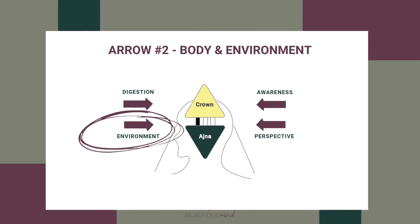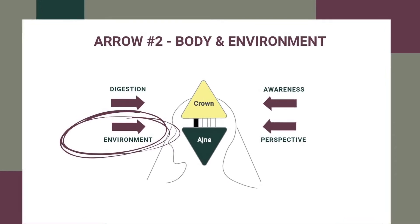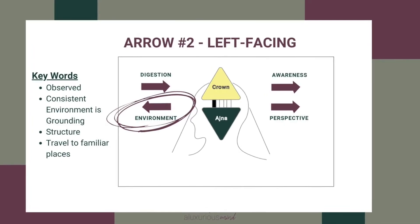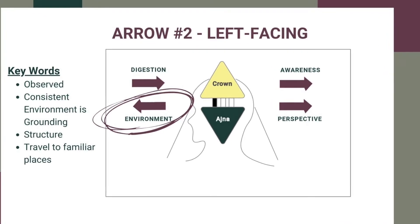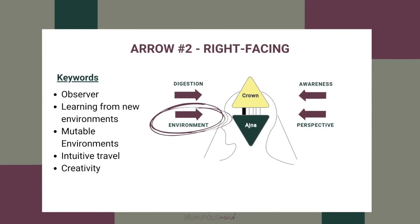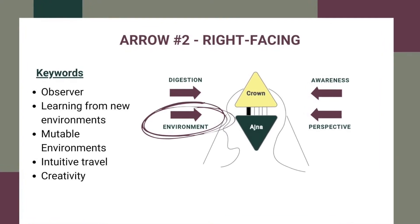Let's talk about arrow number two. Arrow number two is located on the bottom left-hand side of the body graph chart. Generally speaking, this arrow tells us something about our physical body and environment — not just physical environment, but also virtual. If your arrow points left, it might mean you thrive in a more structured, consistent environment. This person likely feels more grounded and able to focus or concentrate when they're in a familiar environment. If your arrow points right, it might mean you learn from seeing a bunch of different environments in action — a mutable, changing location throughout the day might be beneficial for you.